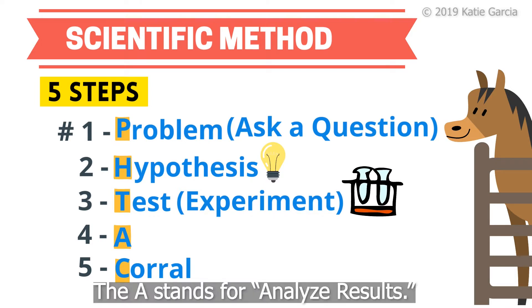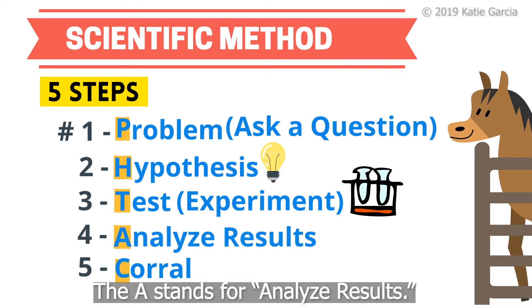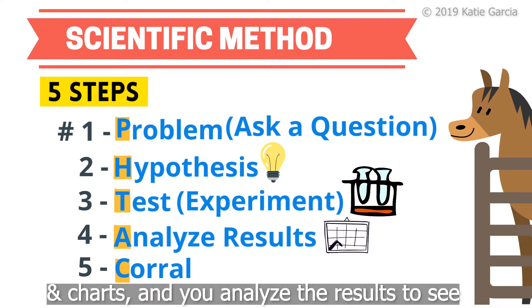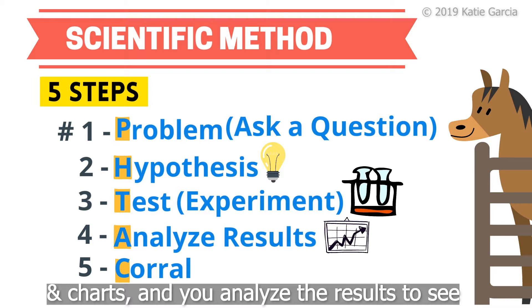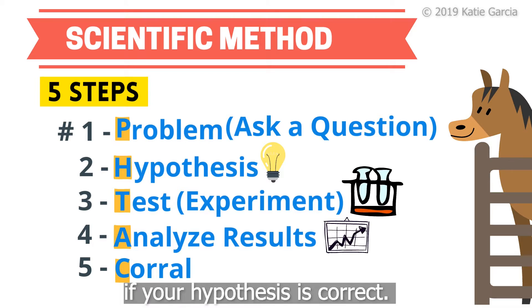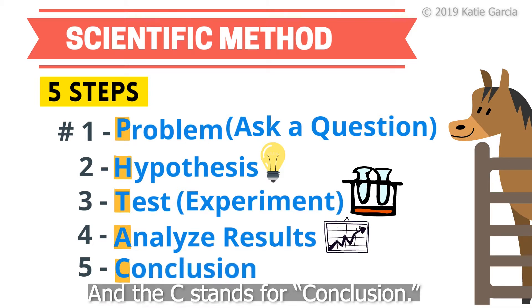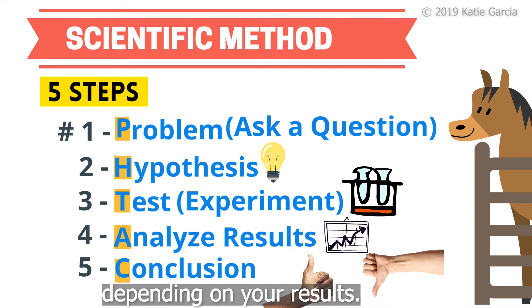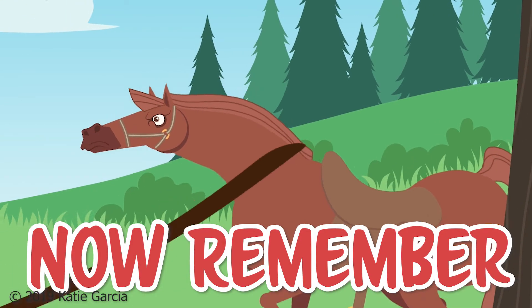The A stands for analyze results. This is where you collect data, make graphs and charts, and analyze the results to see if your hypothesis is correct. And the C stands for conclusion — this is where you accept or reject your hypothesis depending on your results.